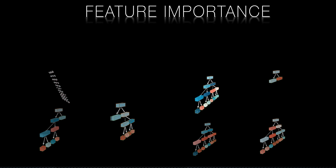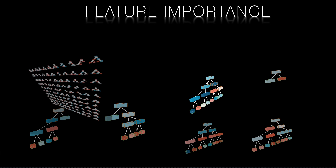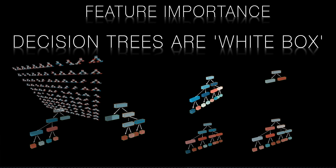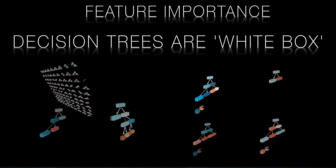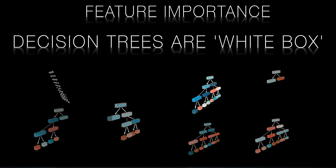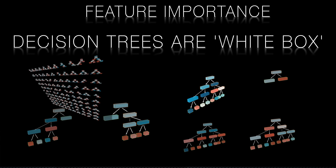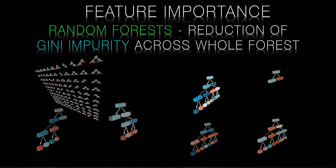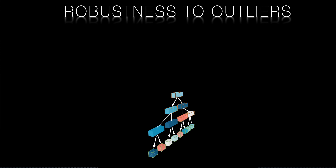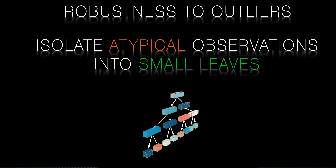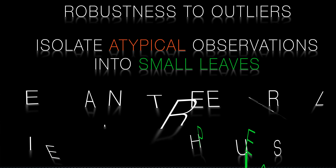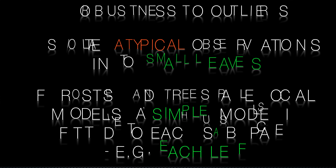We can also use a random forest to determine feature importance. Recall that decision trees are popular because they're white boxes — they show clearly what the key deciding features to split the data are. We can see at every branch the value that minimizes the Gini impurity. With a random forest we have an analogy: we can measure a feature's importance by looking at how much that feature reduces the Gini impurity on average across the whole forest. Random forests can also be shown to be very robust to outliers in data — they tend to crowd out outliers by isolating them in small leaves. Random forests and the decision trees of which they are comprised are local models, fitting a simple model to each subspace.